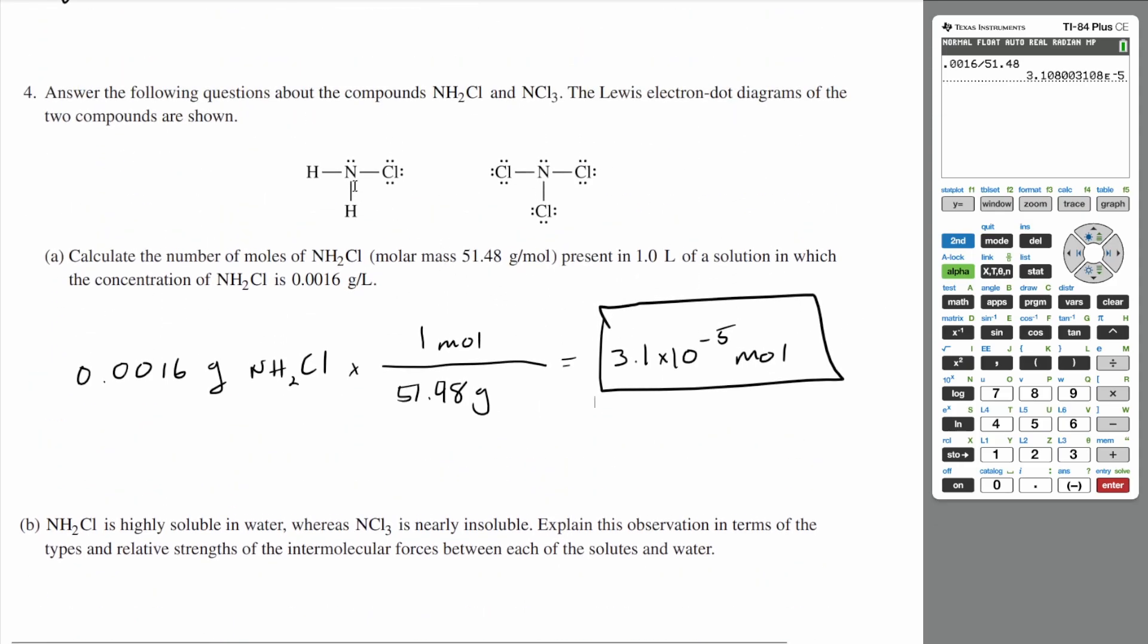If you look at the structures of NH2Cl and NCl3, you realize that both of these are going to have dipoles. Both these compounds are unsymmetric. So in NH2Cl, you'll have a dipole going this way, sort of-ish. And then in NCl3, you'll have a similar dipole, maybe this way.